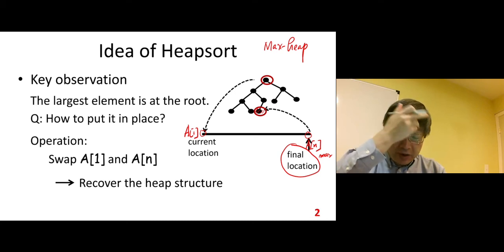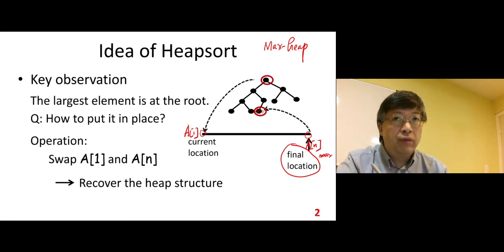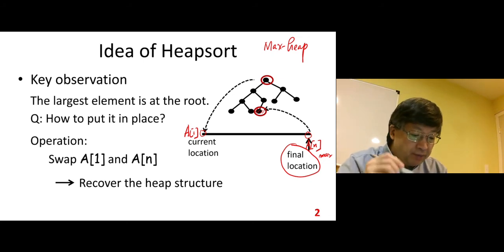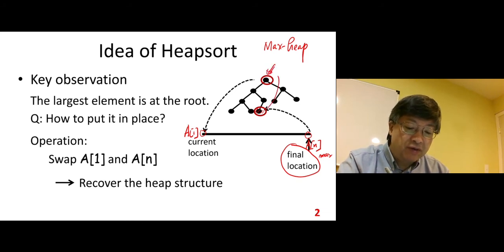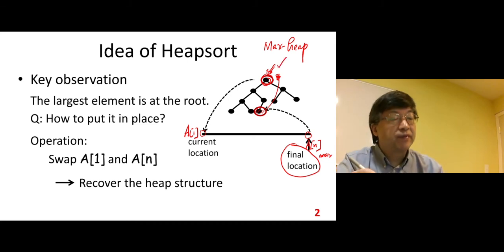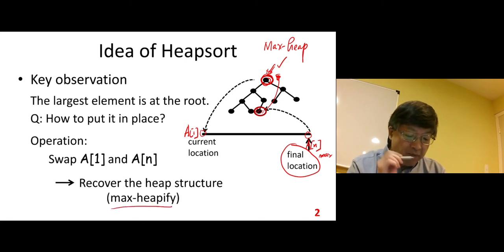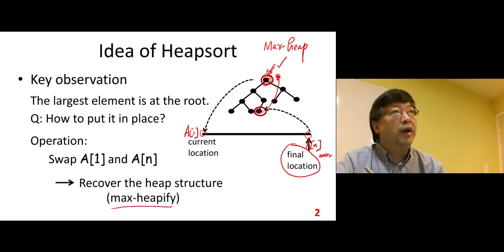But after we do that operation, the heap structure is not correct anymore — we need to fix it. We need to do max heapify at the root location. Because after you do the swap, there is a violation at the root, so we need to fix it. After we fix it, we recover the heap structure. So we need to do one max heapify operation to recover it to a heap — a new heap.